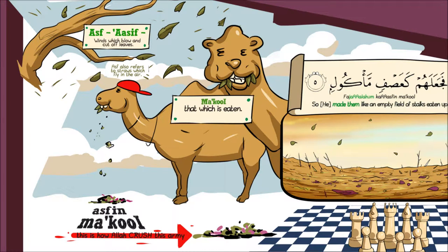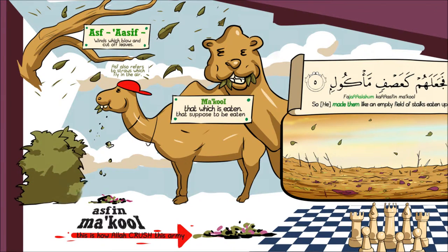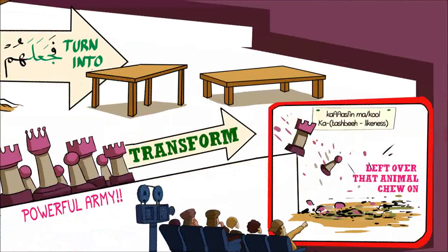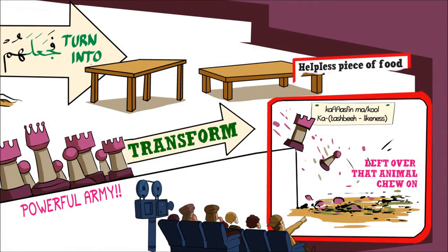Then مَأْكُول also means not just that which is eaten, but that which is supposed to be eaten — something that is there and cannot help itself, you're going to go eat it. An animal that is about to be eaten can at least run away. But straw or hay sitting in front of an animal — that food is defenseless. Its destiny is to get destroyed. Allah compares them to a helpless piece of food that has no option but to get eaten up by its enemy. It's like they had no escape.